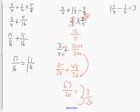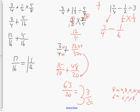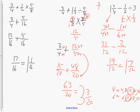The final fraction question is order of operations again. Change 1 and 3 quarters to improper: 7 quarters. Take away 1 half multiplied by the reciprocal of 3. Since 3 is 3 over 1, the reciprocal is 1 third. Multiplying 1 half by 1 third gives 1 sixth. Finding the lowest common denominator of 4 and 6: multiples of 4 are 4, 8, 12; multiples of 6 are 6, 12 — so LCD is 12. That gives 21 twelfths minus 2 twelfths equals 19 twelfths, or 1 and 7 twelfths.